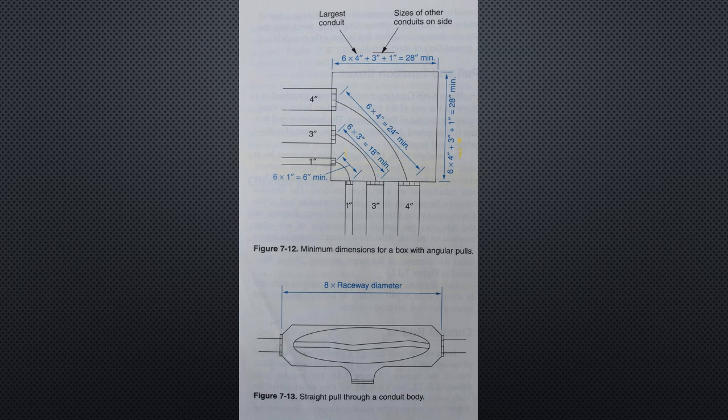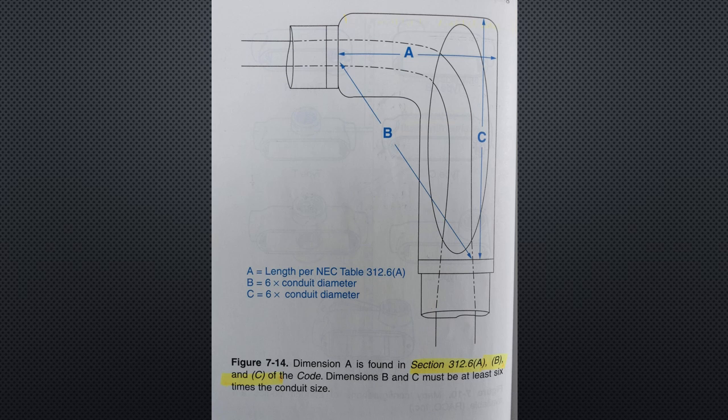Conduit bodies: for a straight pull through a conduit body, the length of the conduit must be at least eight times the diameter of the raceway. Figure 7-13 on the bottom. For angular pulls through LB, LL, and LR types, the long dimension of the body and the distance between raceway openings must be greater than six times the raceway diameter. However, the distance between the raceway entry and opposite wall along the short dimension can be less. The minimum distances are shown in section 312.6 A, B, and C of the code. For this, see Figure 7-14 on the screen.